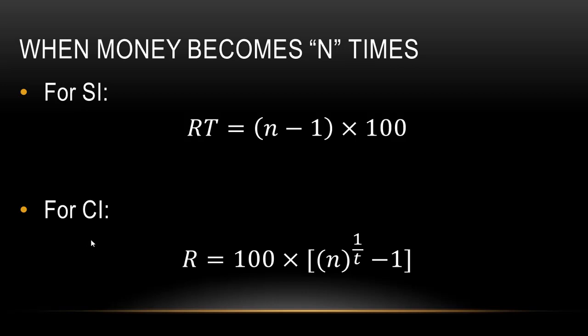For compound interest, suppose the money becomes 16 times in 4 years. To find the rate of interest, compute 16^(1/4) = 2, then 2 − 1 = 1, so the rate of interest is 100 × 1 = 100%. For such questions based on money becoming n times, these two formulas let you find the rate of interest very quickly rather than using the conventional method.